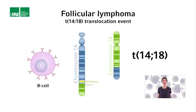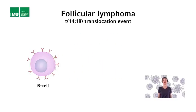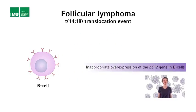What is the consequence of this translocation for the BCL2 gene? The consequence is that the BCL2 gene now is under the control of the strong B cell enhancer, and therefore highly expressed in B cells. The T1418 translocation basically results in the inappropriate overexpression of the BCL2 gene in B cells.